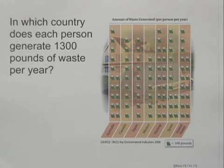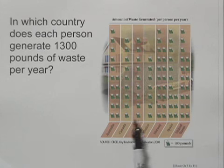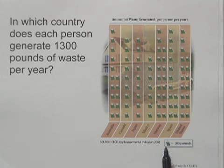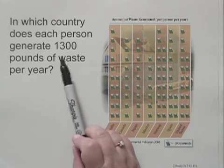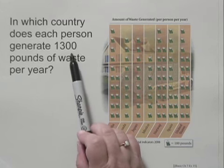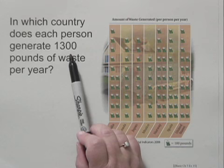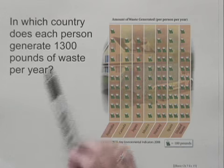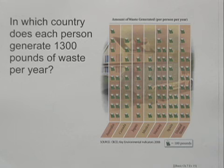We first need to find out what the symbols in the pictograph represent. We see from the key that each symbol represents 100 pounds. Since 1,300 divided by 100 is 13 — in other words, this is the same as 13 hundreds — we look for a country that is represented by 13 symbols.